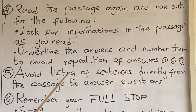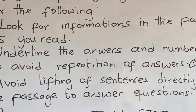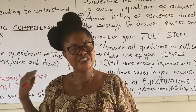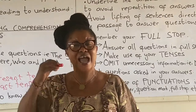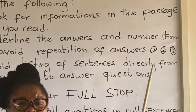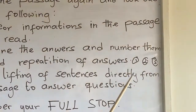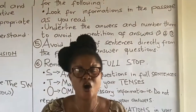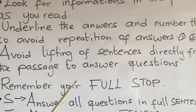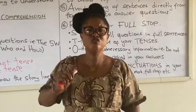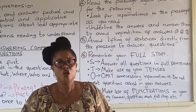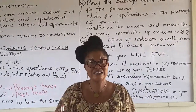Underline the answers and number them to avoid repetition. If an answer is for question one, put question one on top; if it is for question two, put question two on top. Step five: avoid lifting sentences directly from the passage to answer questions. Use your own words to form meaningful sentences to answer.